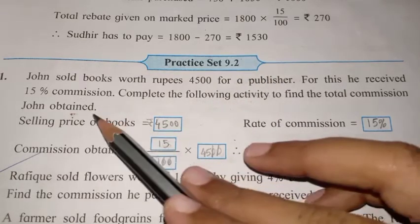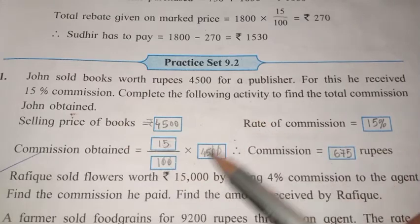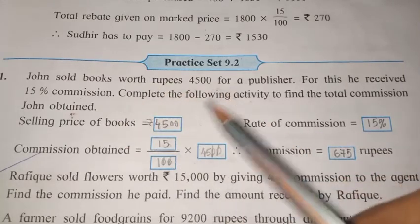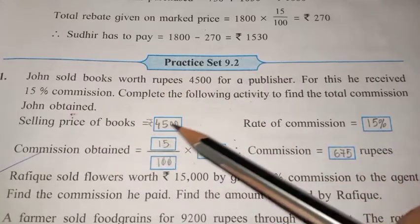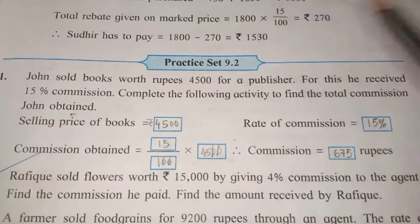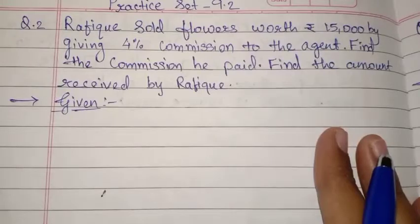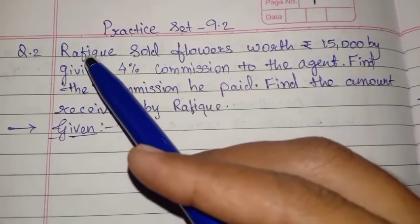For this type of activity-based question, when it is asked in the paper, you have to write it as it is — don't write any extra steps. Just fill in the values in the given boxes and do the calculation.